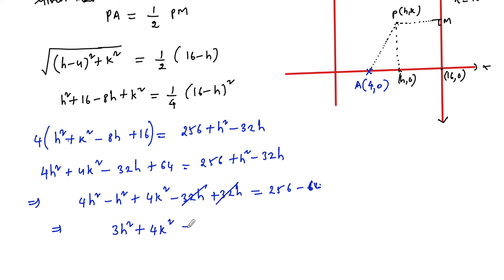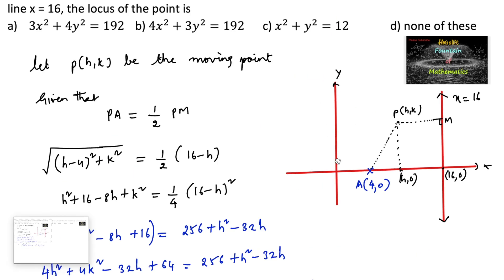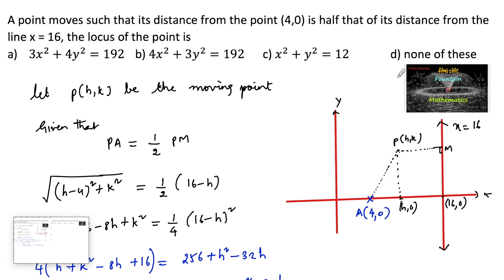Therefore, the locus of P(h, k) is 3x² + 4y² = 192. So option A is the answer.